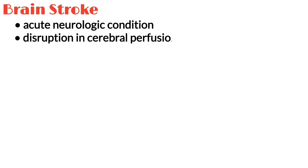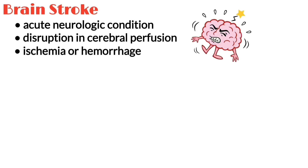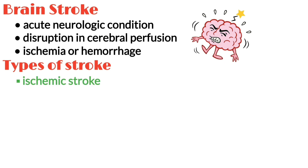A stroke is an acute neurologic condition resulting from a disruption in cerebral perfusion, either due to ischemia or hemorrhage. There are two types of strokes: ischemic strokes and hemorrhagic strokes.